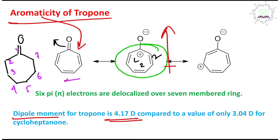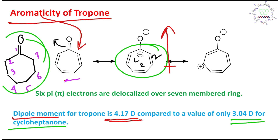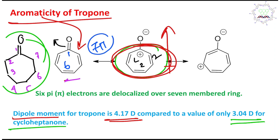Comparing with cycloheptadienone — a non-aromatic seven-membered ketone analog — its dipole moment is about 3.0 Debye. This comparison shows how much the aromatic stabilization of the charge-separated species contributes to the dipole moment. The uncharged canonical form of cycloheptadienone has seven pi electrons and is not aromatic, whereas tropone's charge-separated form gains aromatic stabilization, significantly increasing its contribution to the resonance hybrid.